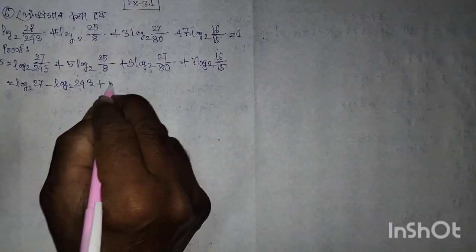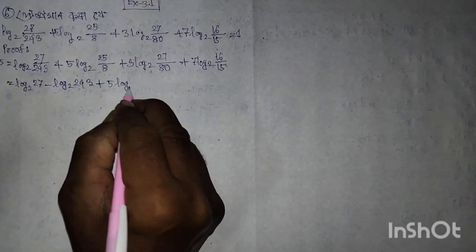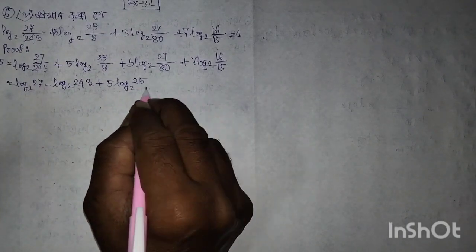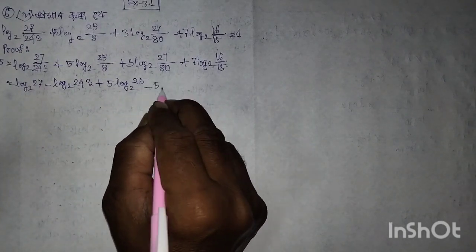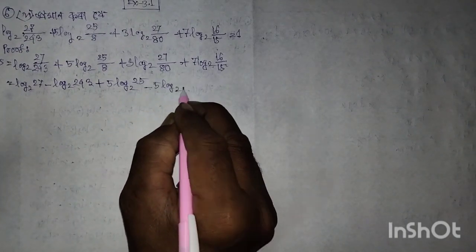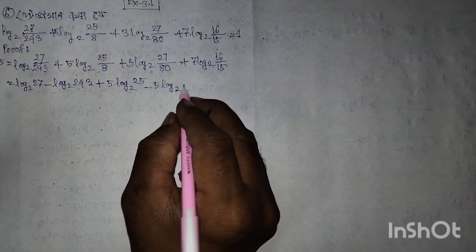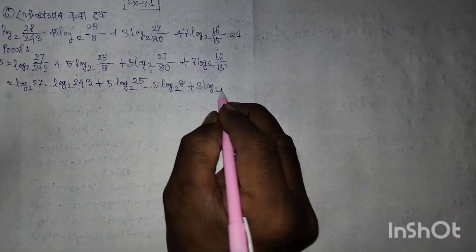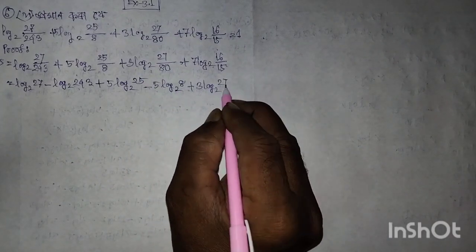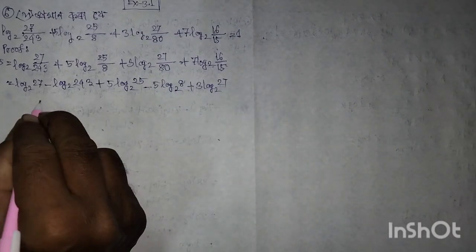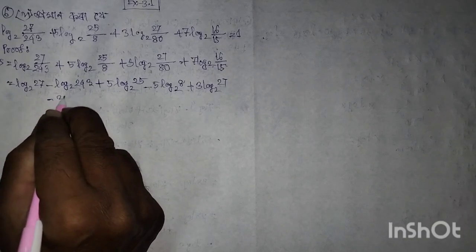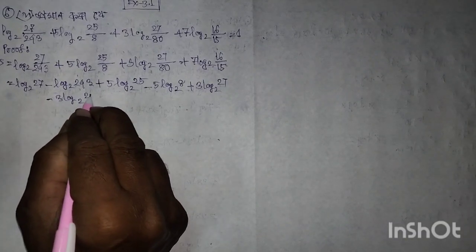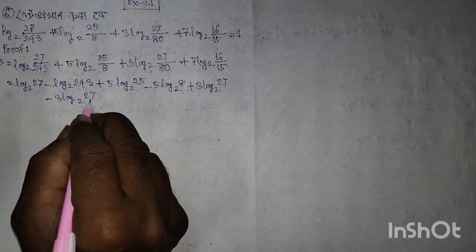Plus 5 log 2 of 25, minus 5 log 2 of 8, plus 3 log 2 of 27, minus 3 log 2 of 27.